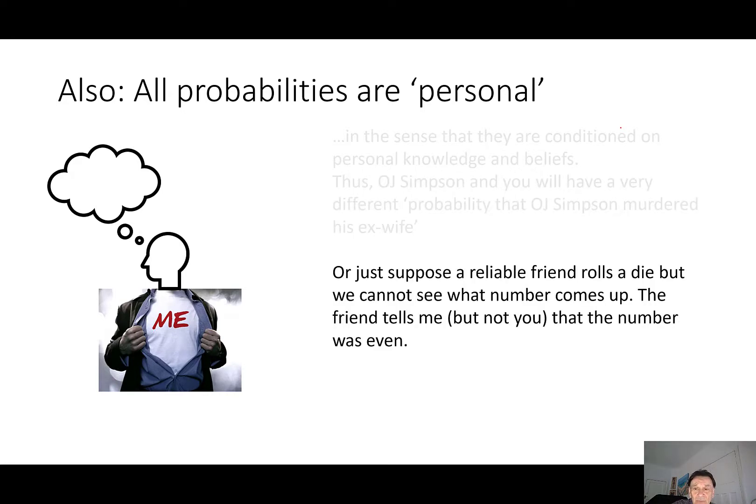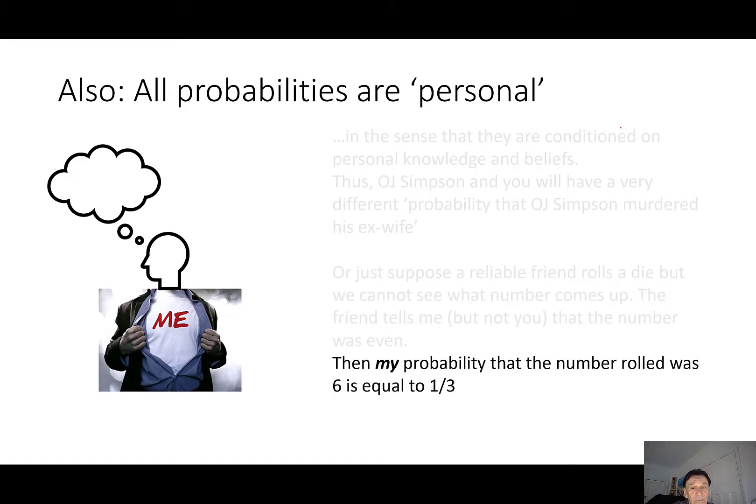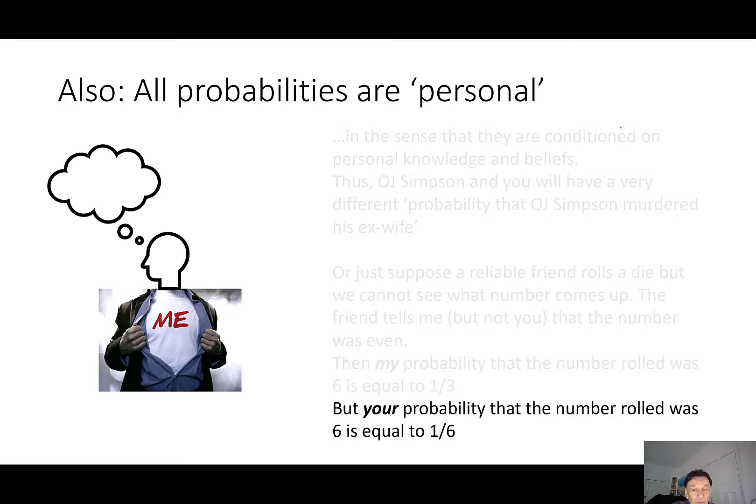Well, just look at another example. Just suppose a reliable friend rolls a die, but we cannot see what number comes up. The friend tells me, but not you, that the number was even. Then my probability that the number rolled was six is equal to a third. But your probability that the number rolled was a six is equal to 1/6. And they're both rational and correct probabilities given the information available.